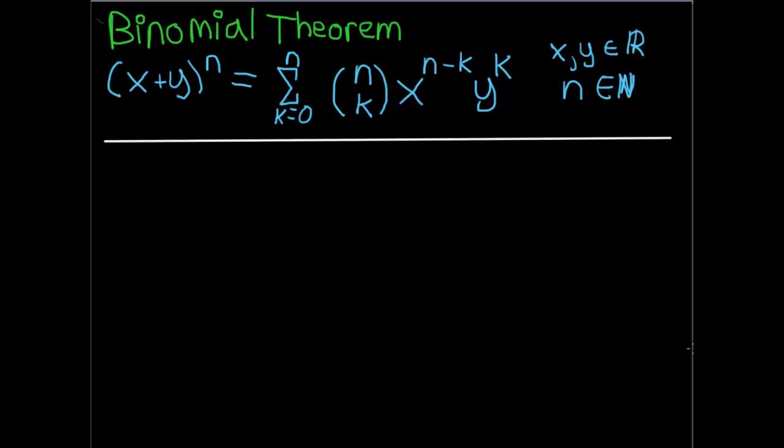Hey guys. Today we're going to talk about the binomial theorem and the proof of it using induction. The binomial theorem states that x plus y to the nth power is equal to the summation of k equals 0 to n of n choose k, x to the n minus k power, y to the k power, where x and y exist in the real numbers and n exists in the natural numbers.